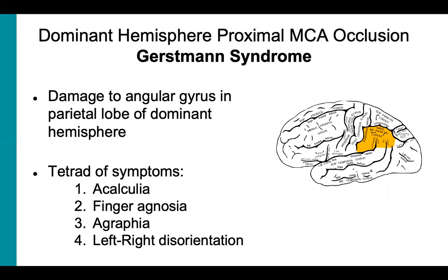Another effect of an MCA stroke on the dominant side is Gerstmann syndrome, which occurs with damage to the posterior lobule of the parietal lobe in the dominant hemisphere, especially the angular gyrus. These patients have trouble with spatial orientation, which manifests as a tetrad of symptoms: acalculia, which is impairment in performing simple calculations; finger agnosia, in which they can't distinguish between the fingers on their hand; agraphia, which is a deficiency in the ability to write, often coming with alexia too; and left-right disorientation, in which the patient can't distinguish between the left and right sides of their body.